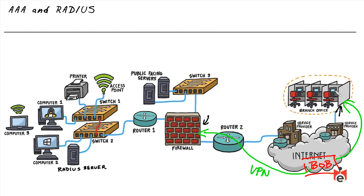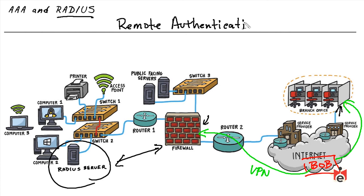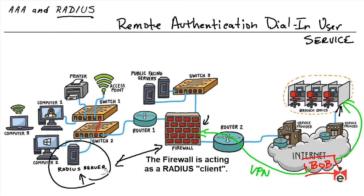Instead, we use a centralized clearinghouse server holding all information about Bob — his passwords and what he's allowed to do. The firewall needs a protocol to communicate with this server to verify Bob's credentials. That protocol is called RADIUS — Remote Authentication Dial-In User Service. A server holding all user information and using RADIUS as the communication protocol is called a RADIUS server, and the firewall acts as a RADIUS client checking with it to verify Bob's identity.